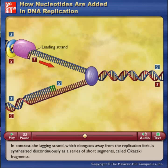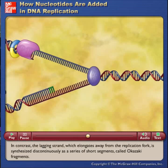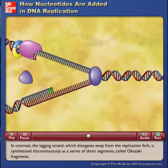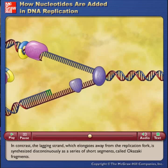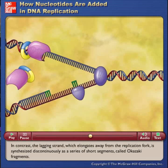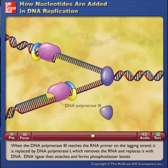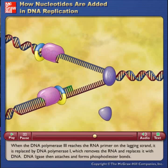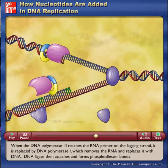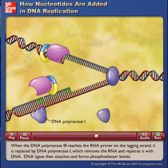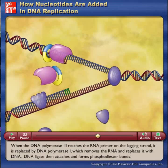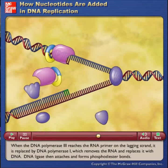In contrast, the lagging strand, which elongates away from the replication fork, is synthesized discontinuously as a series of short segments called Okazaki fragments. When DNA polymerase III reaches the RNA primer on the lagging strand, it is replaced by DNA polymerase I, which removes the RNA and replaces it with DNA.